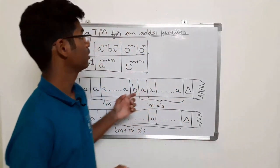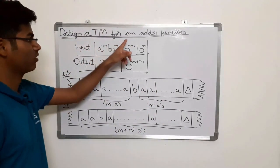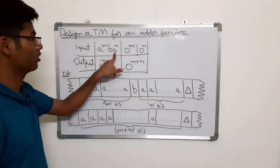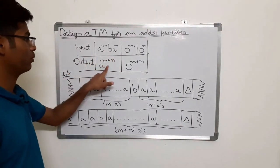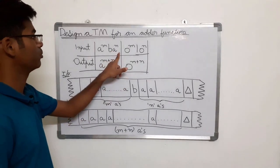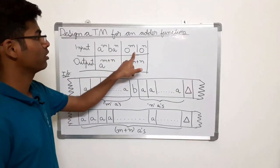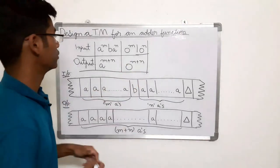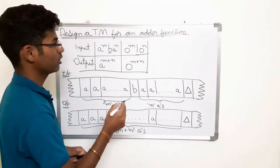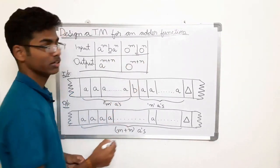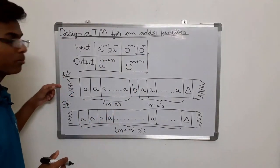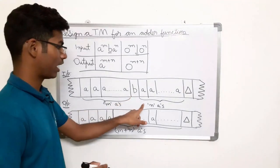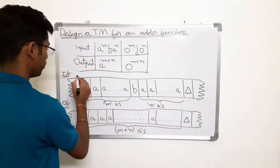Let's solve this question: design a Turing machine for an adder function. If the input is a^m b a^n, then the output should be a^(m+n). This b here is called a delimiter. So on the tape, if the input is m a's, then a delimiter b, then n a's, the output should be a^(m+n).